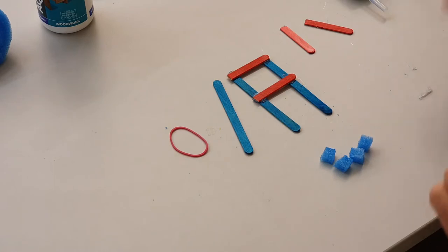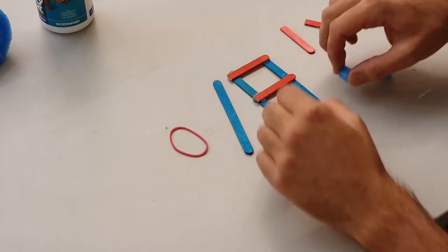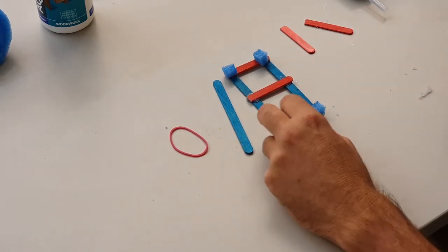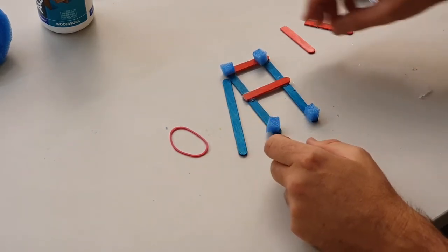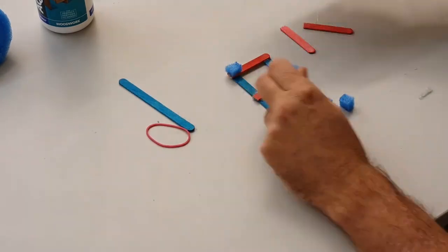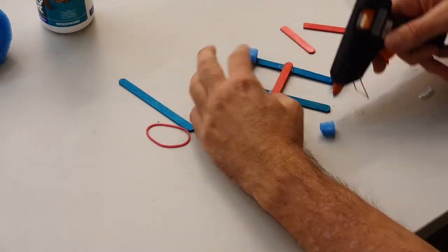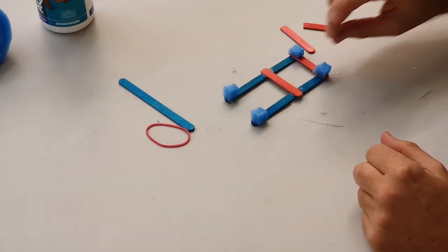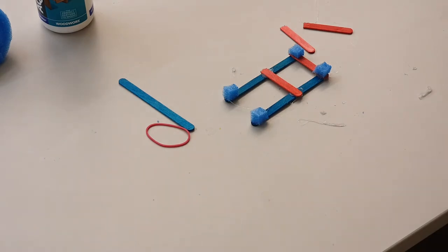And the last bit of gluing is to put these four pieces and glue them on like that. I'll do them one at a time. Now I'll wait a minute for that to dry and then we'll put in our propeller.